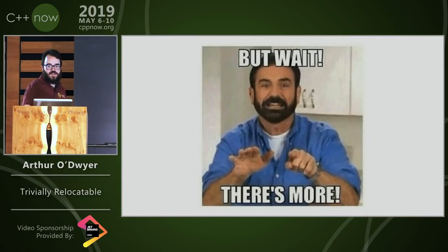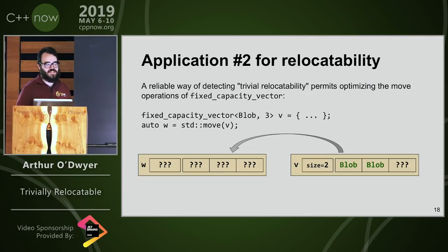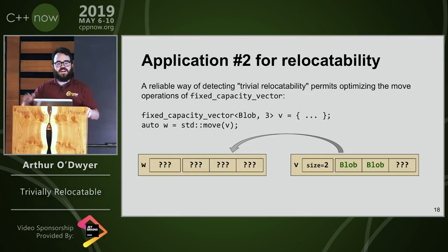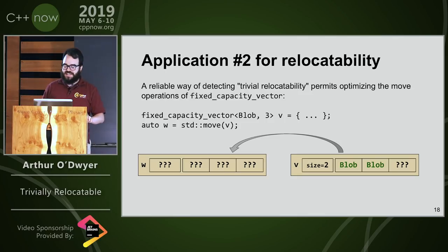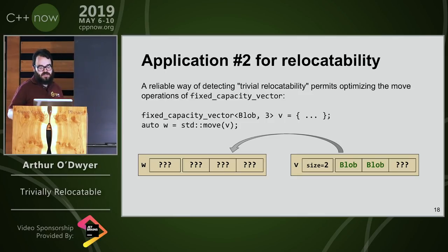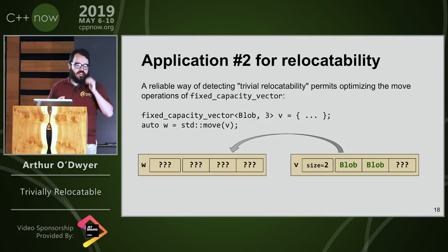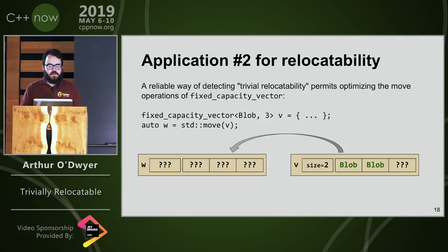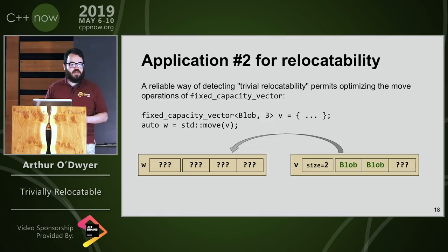So I can do faster code and three times smaller code on this toy example. But wait, there's more — this is the stuff that's new. If you saw my talk last year — a lot of people in this room did. Let's talk about some other applications. If we have a reliable way of detecting trivially relocatable types, we can optimize the move operations of fixed-capacity vector.